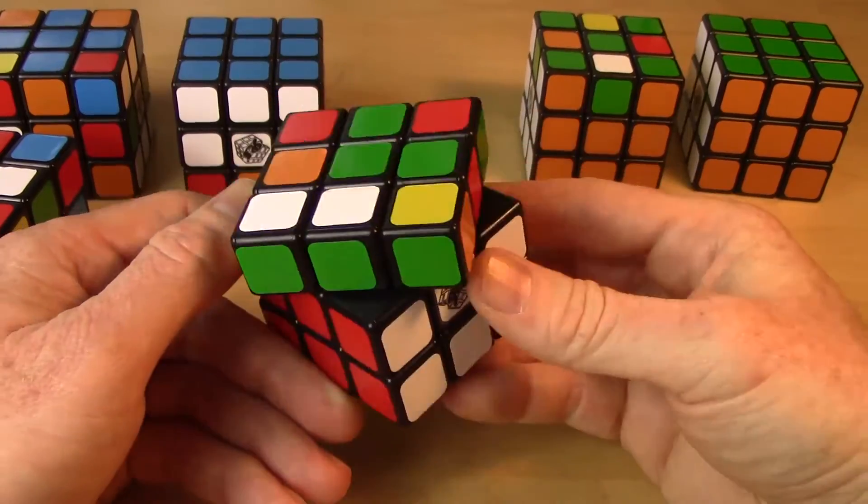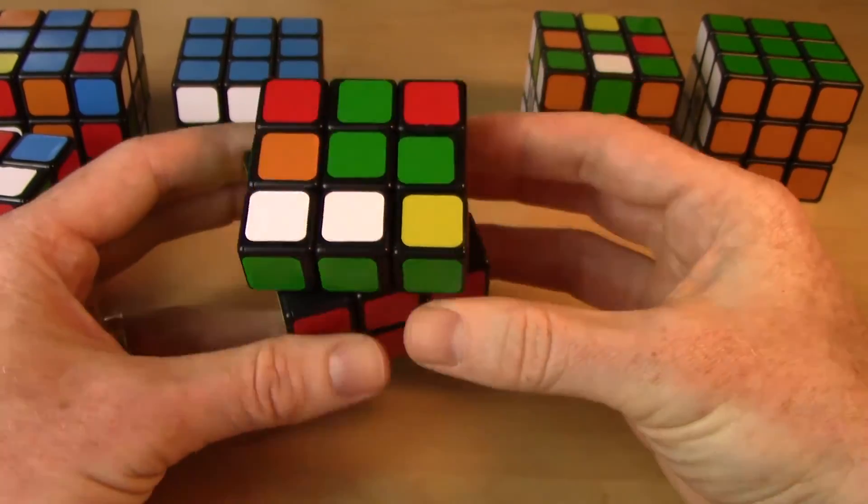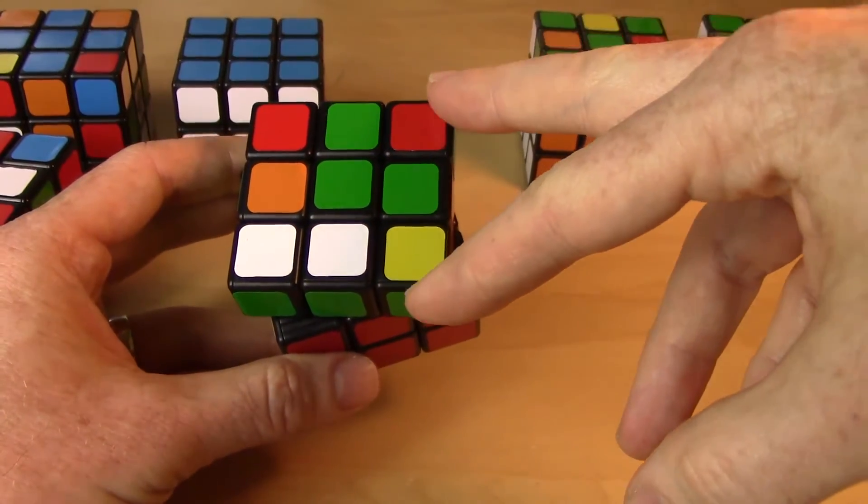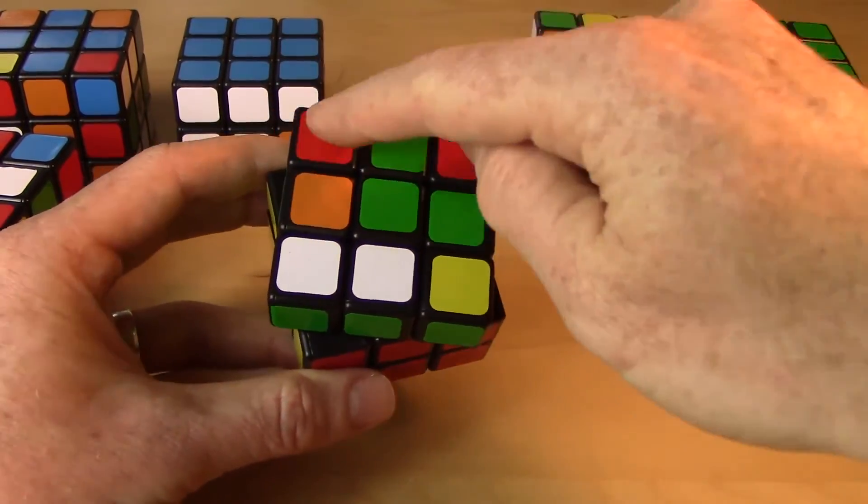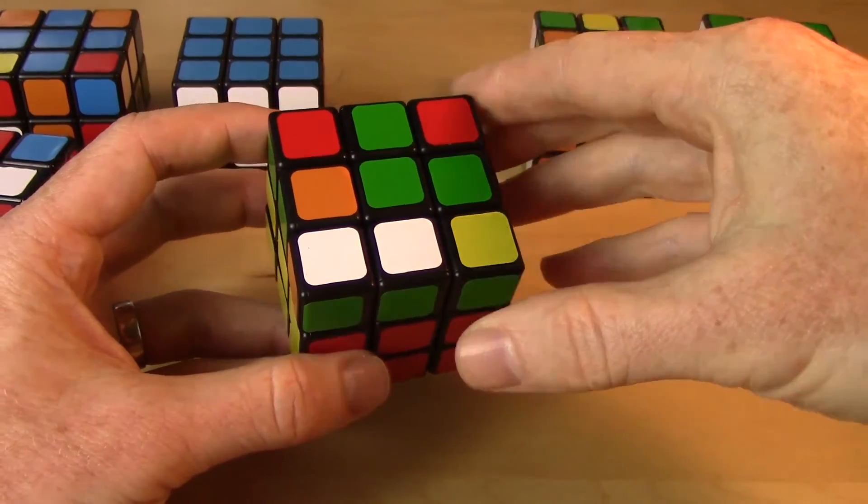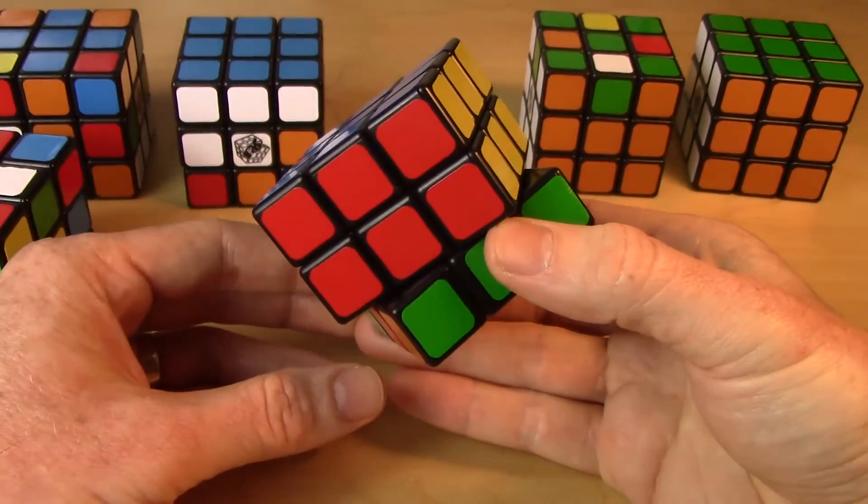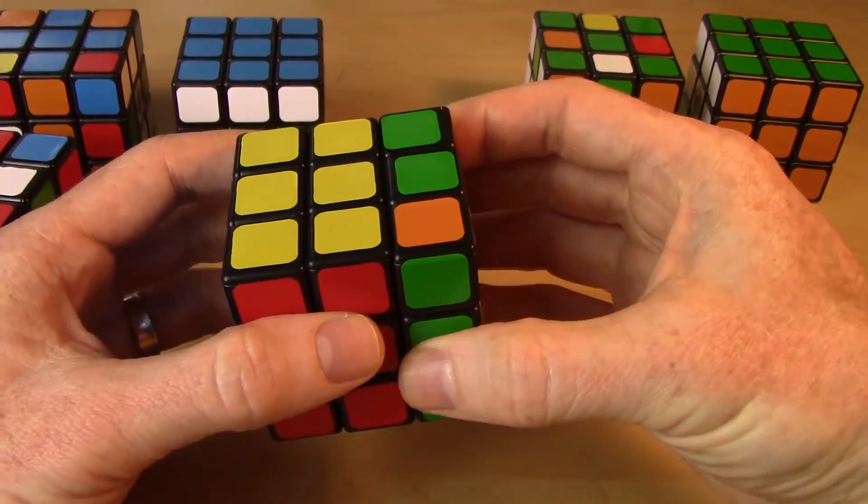At this stage, we will flip the puzzle over and we'll go to work on the last layer. And how we'll solve the last layer is we'll work on the corners first. We'll solve all four corners. And then the last step is to solve all four edges. So this was step three getting to this stage here. Top two layers done.